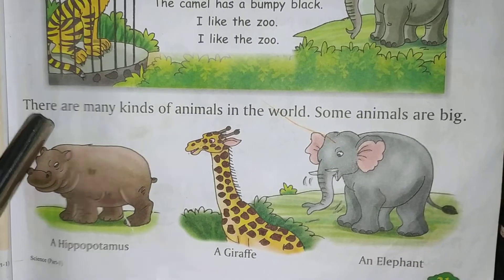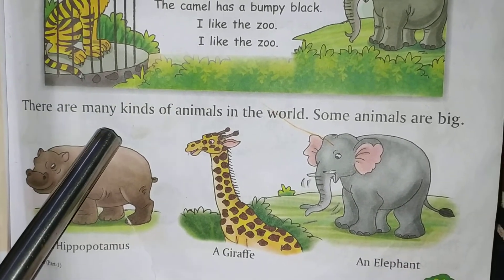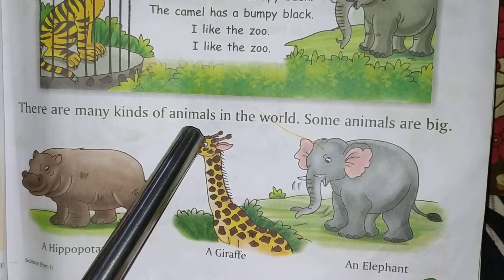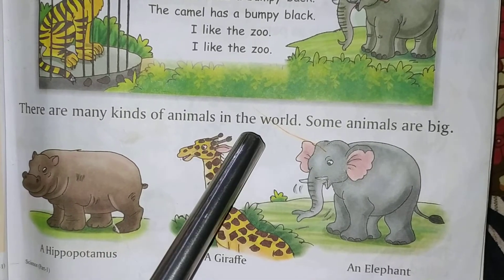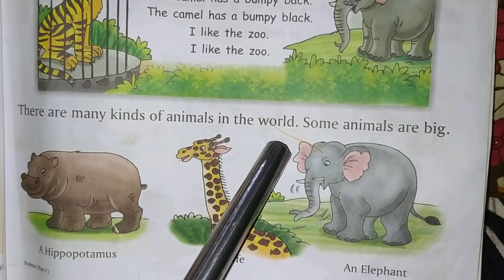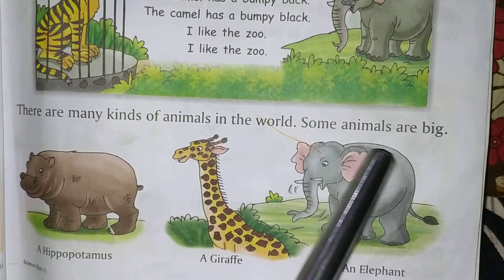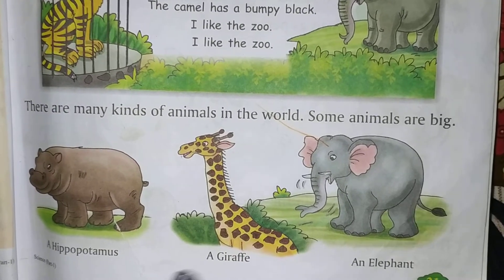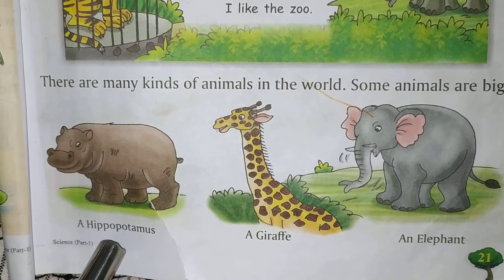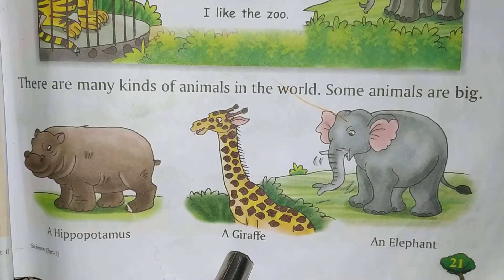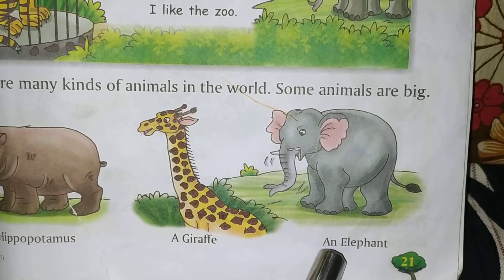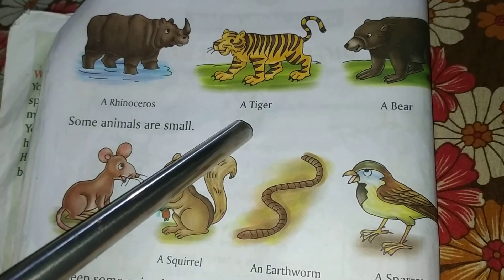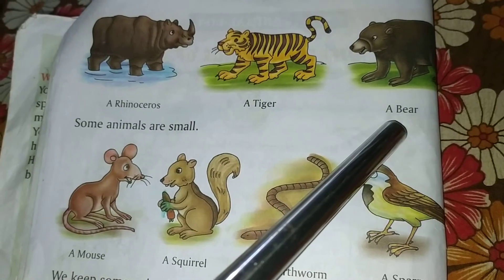There are many kinds of animals in the world. Some animals are big. For example, a hippopotamus, a giraffe, an elephant, a rhinoceros, a tiger and a bear.